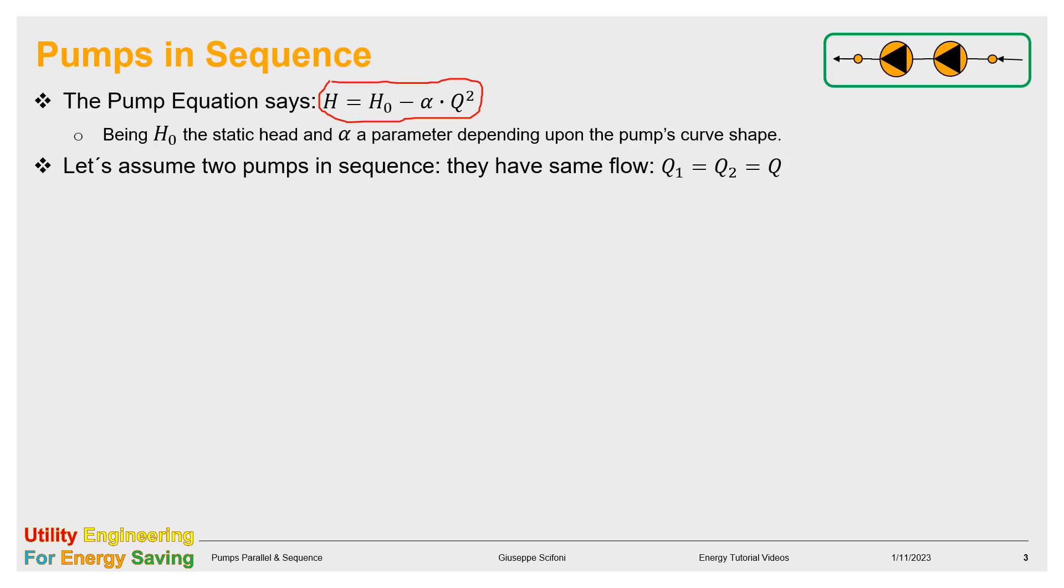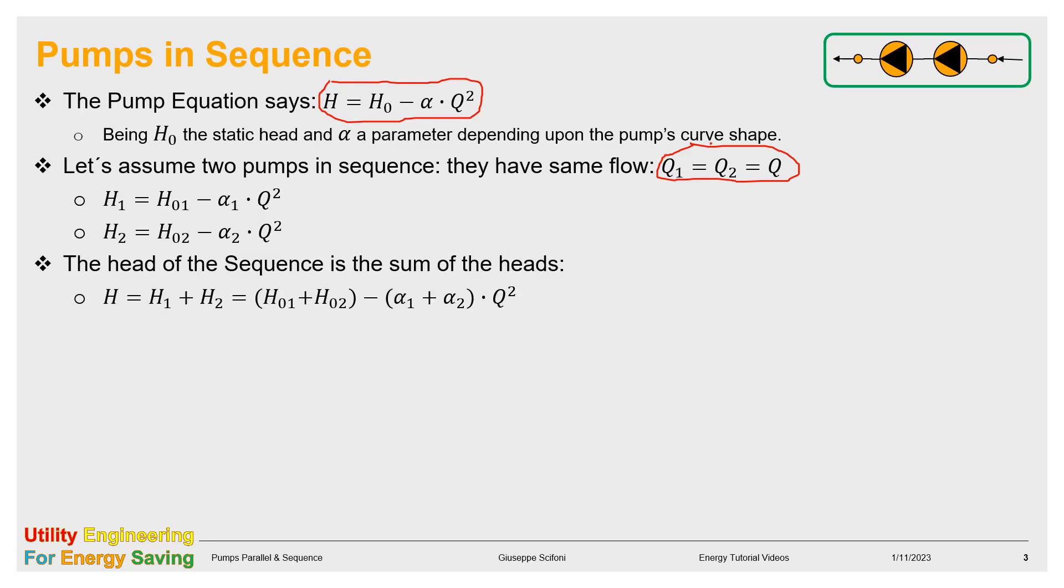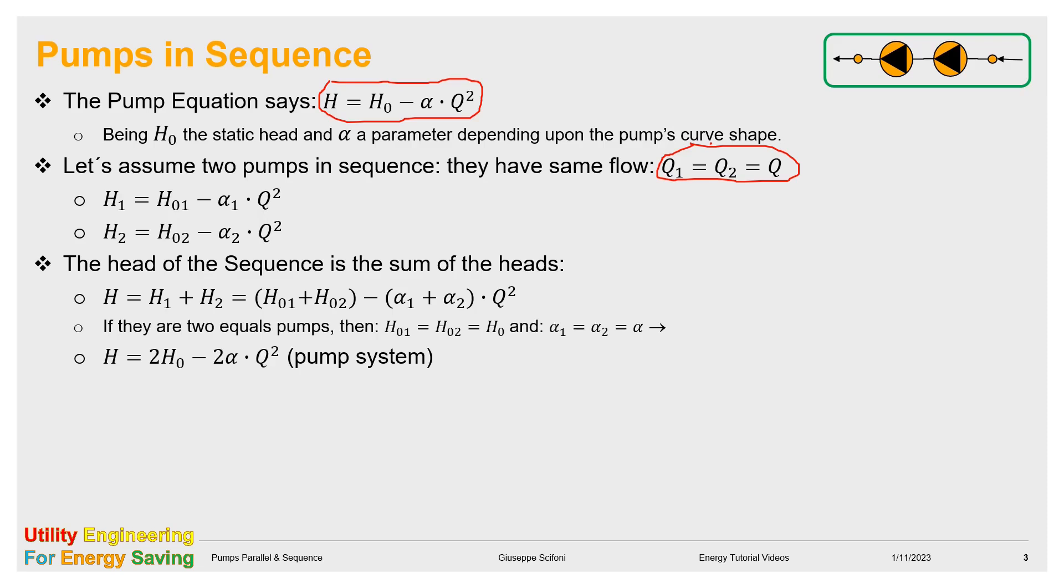Since the pumps are in sequence, they share the flow. Also, Q₁ equals Q₂ equals Q. On the other hand, the heads are added. So, we sum the two pump curves. If the pumps are equal, then the static heads H₀ and the curve shape α are the same. We obtain the curve of the new pump system. The working point is the intersection of the network curve with the pump system curve, already found.